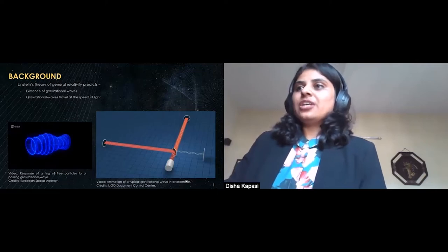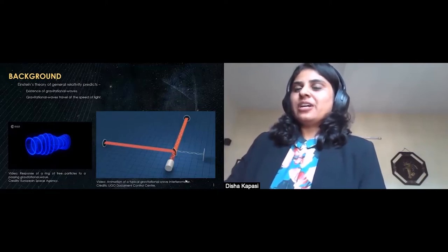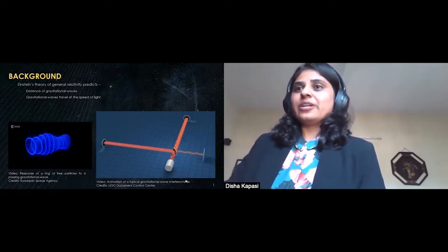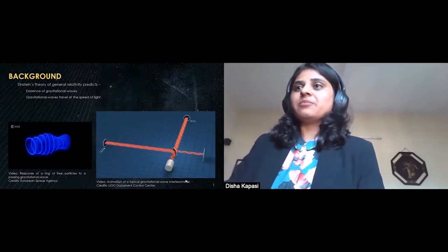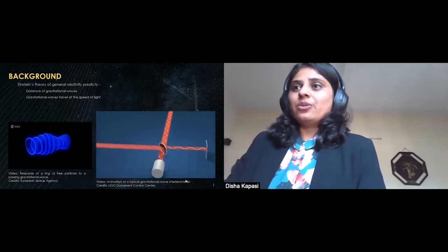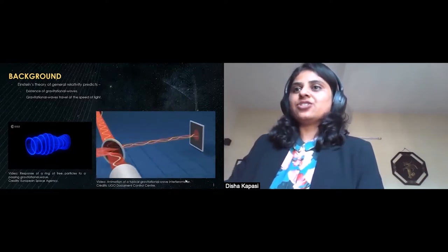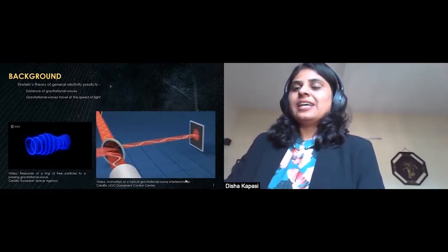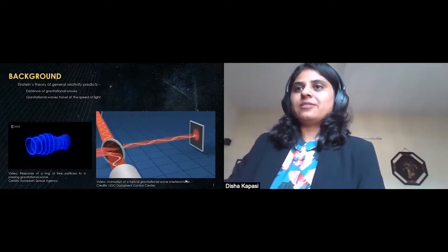What you see at the output in this animation is a very exaggerated signal, whereas what we actually measure is something really tiny. It's important to note that the laser here is our ruler, which helps us measure these length fluctuations, and hence its stability is an important criterion for the observatory.